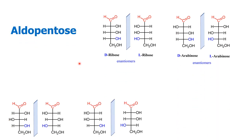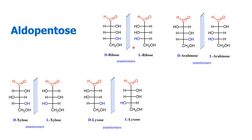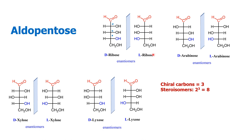Let us see the aldopentoses. When we see the aldopentoses, there are eight different aldopentoses, and we must remember these aldopentoses have three chiral carbons. Because there are three chiral carbons, they can form eight stereoisomers. You have four D-aldopentoses and four L-aldopentoses. The D and L forms are mirror image isomers which are non-superimposable — that is why they are called enantiomers. D-ribose and D-arabinose are diastereomers, and the others are also diastereomers.